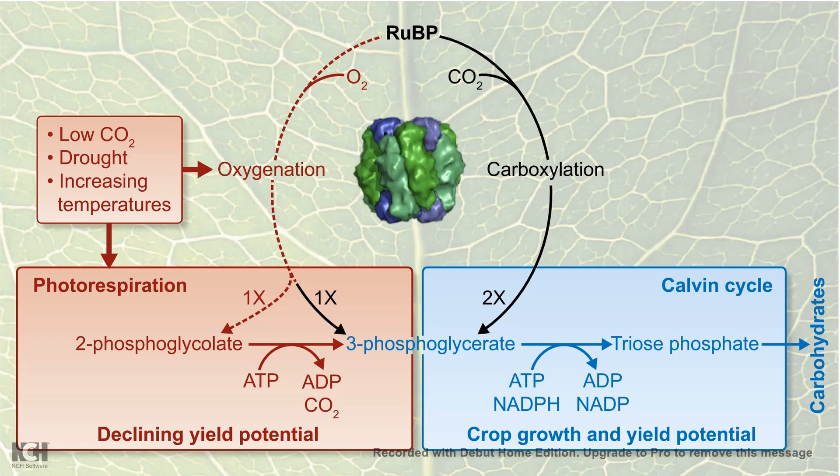Depending upon oxygen and carbon dioxide concentration, rubisco has to decide whether it would perform the reactions of the Calvin cycle and ultimately produce glucose or carbohydrates in a productive fashion to help plant growth, or whether it would divert into a wasteful process and form 2-phosphoglycolate — that is the photorespiration pathway. Rubisco takes this decision based on oxygen concentration, carbon dioxide concentration, pH, temperature, and magnesium ion concentration.